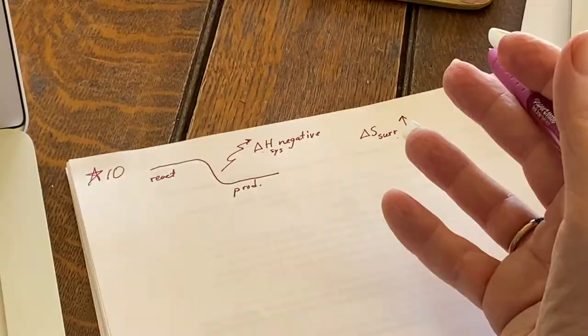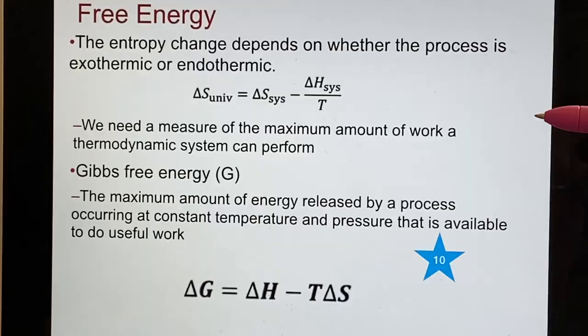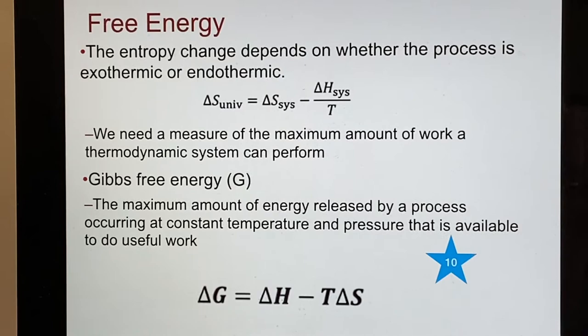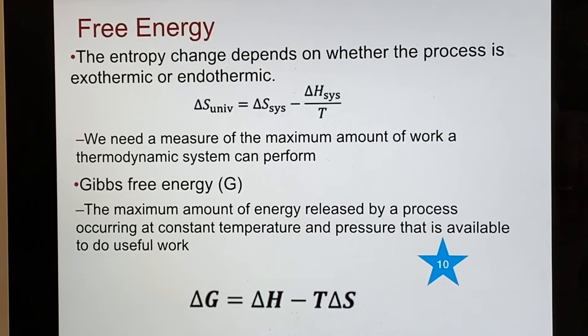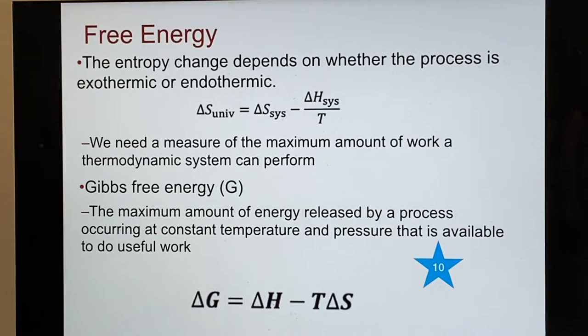We've already found out that we don't get to use all the energy — there are losses. So what is the maximum amount of work that a thermodynamic system can perform? We're going to call this particular quantity free energy, and more specifically, Gibbs free energy, named after a particular chemist.